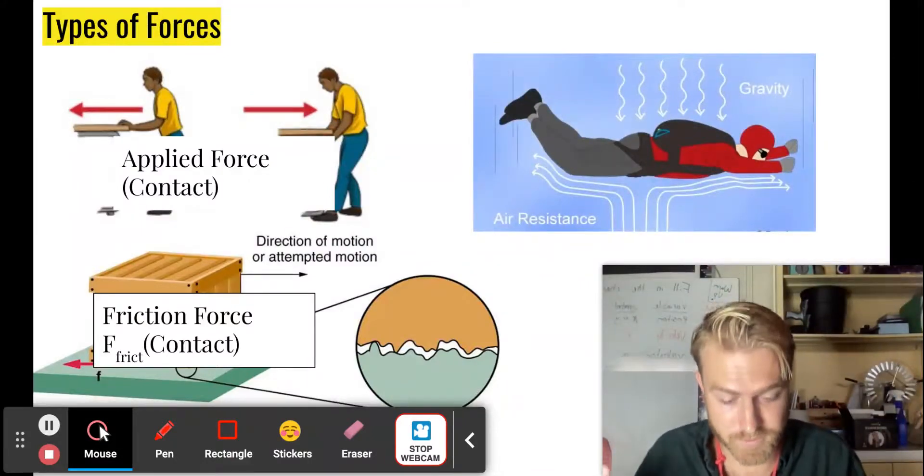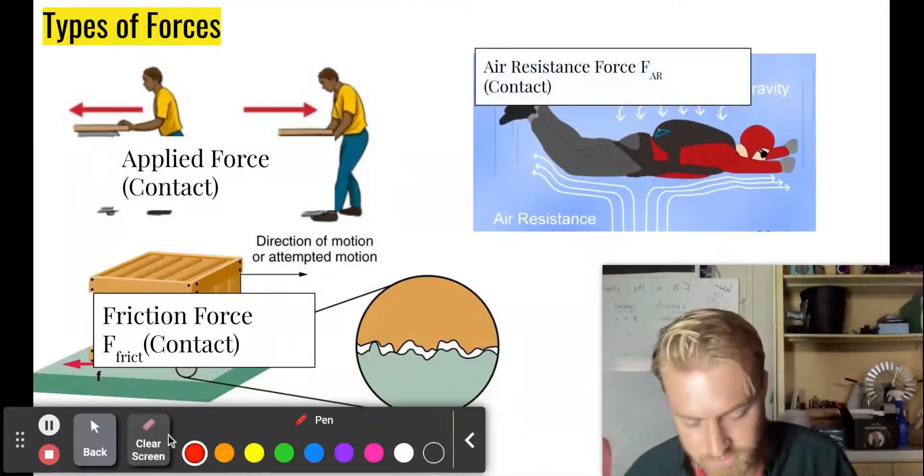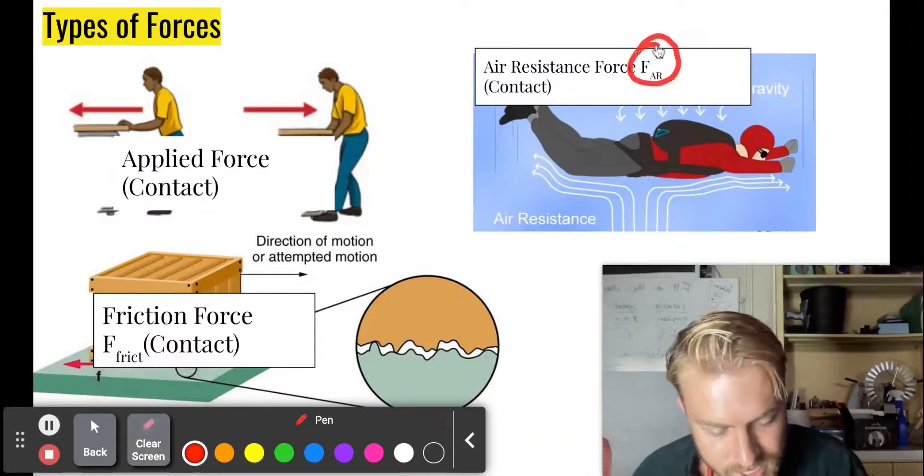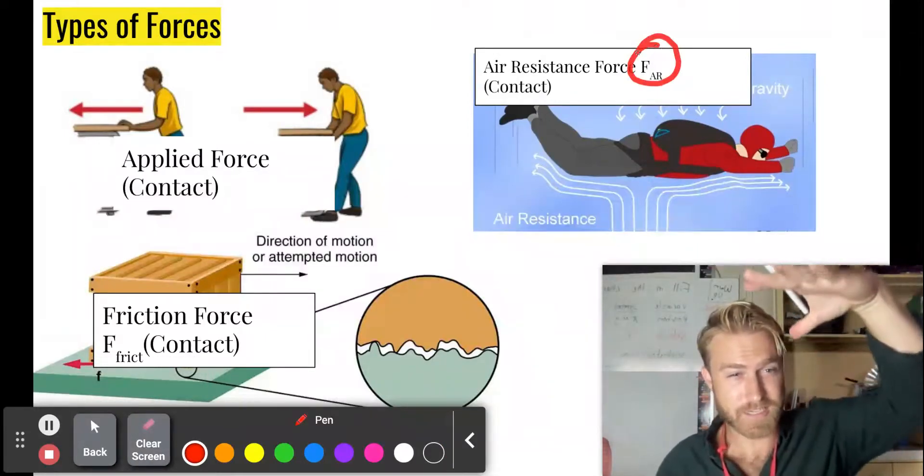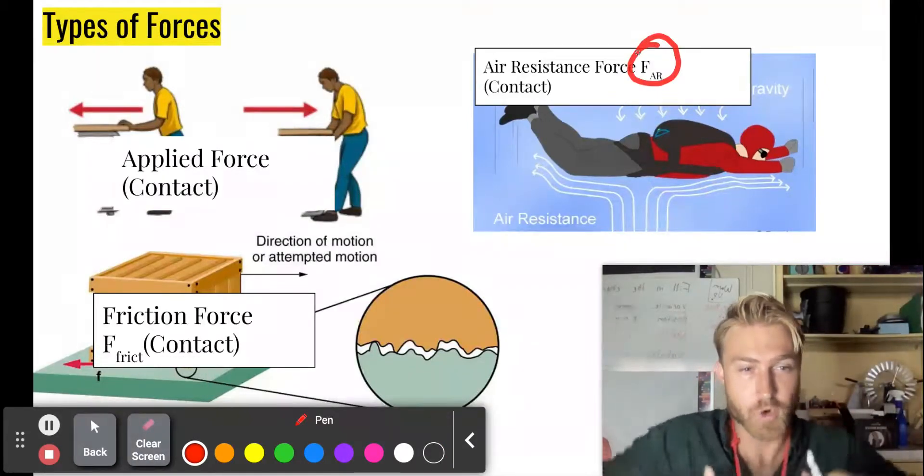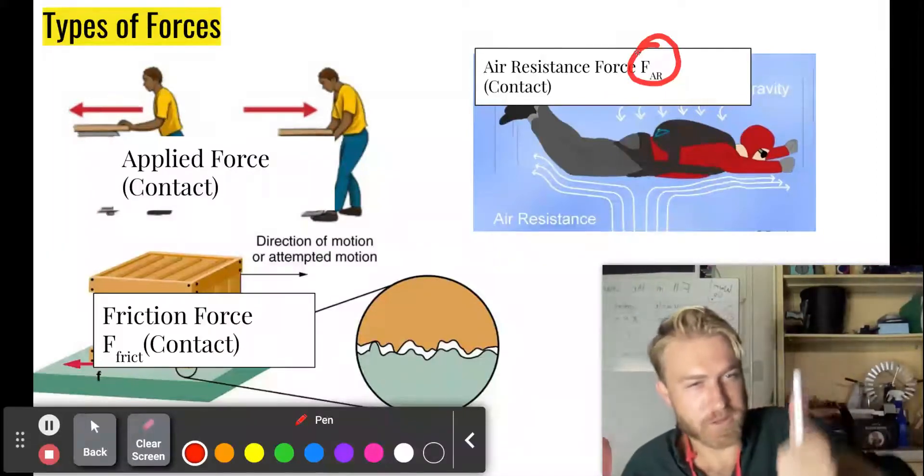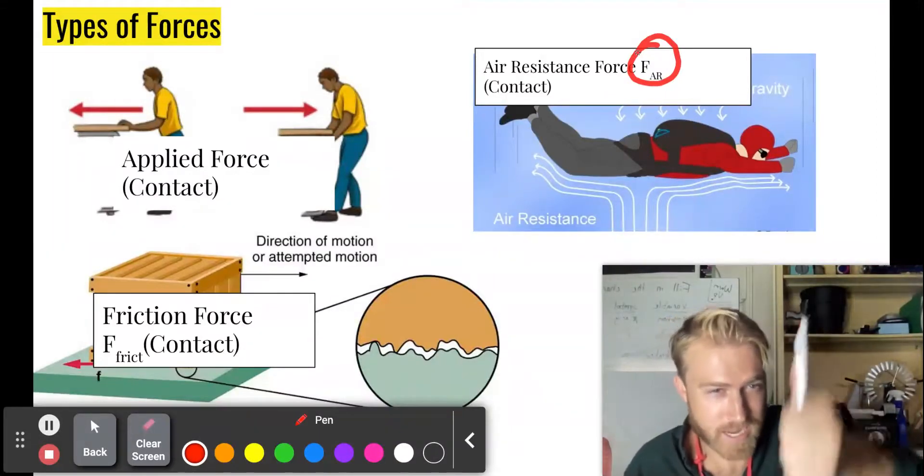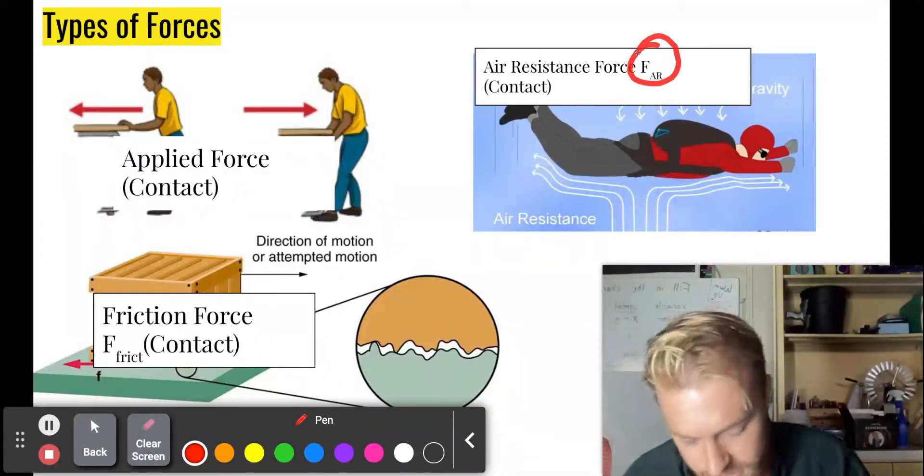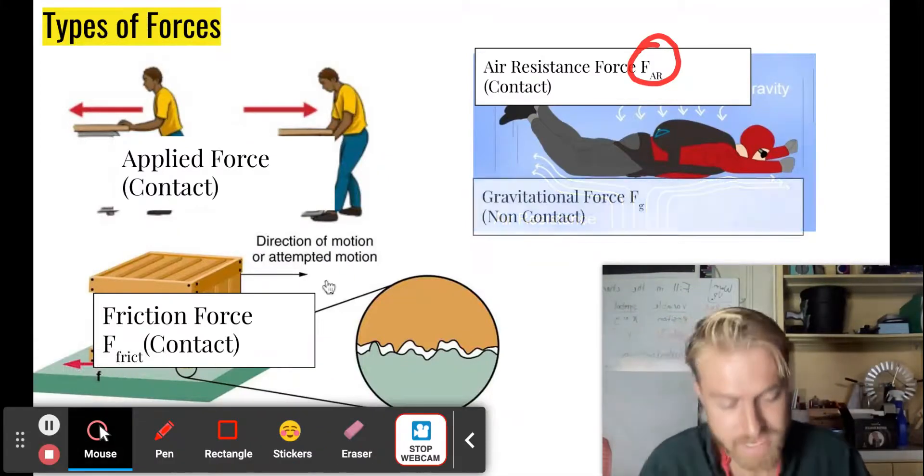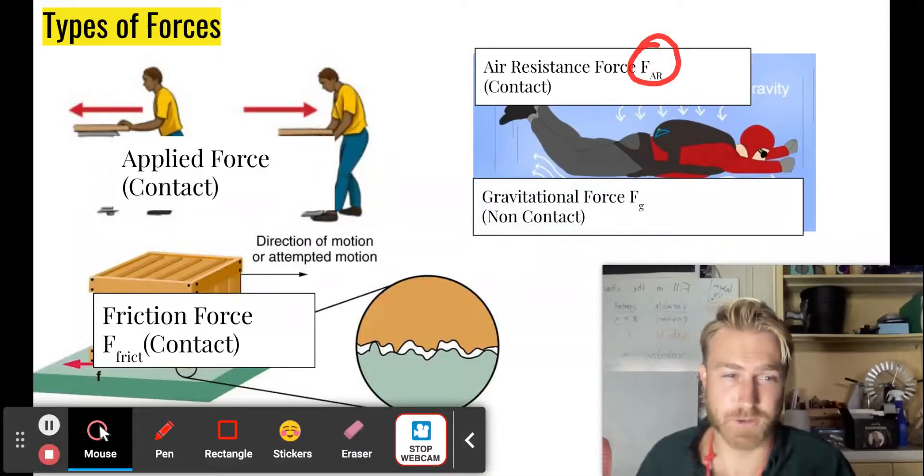A skydiver is going to feel the force of air resistance. We write that F sub AR because they are falling and they're coming into contact with all the oxygen, all the nitrogen, all those air molecules. And those air molecules are pushing that skydiver back up.